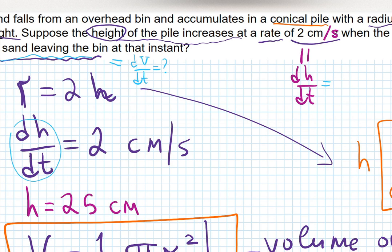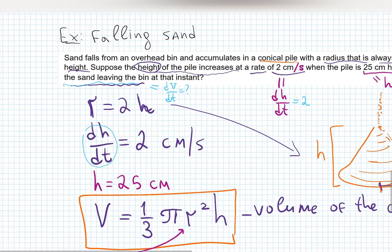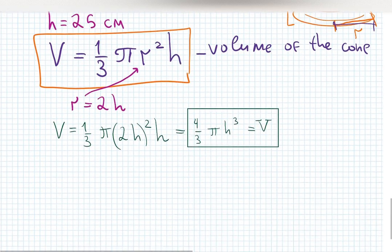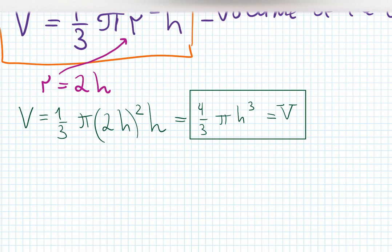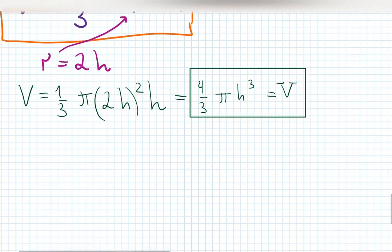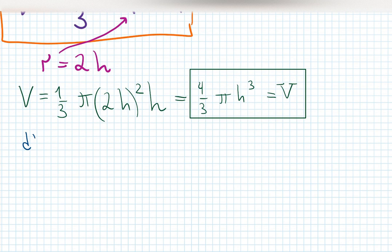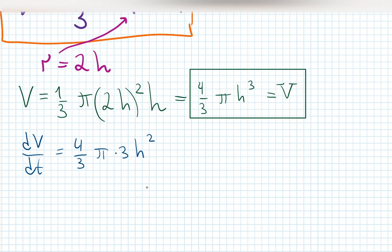dh/dt is 2; dV/dt is unknown. That's the classical related rates setup — one rate given, one unknown. Now differentiate V equals four-thirds pi h-cubed. Four-thirds is constant, pi is constant, h is the variable with respect to t. So dV/dt equals four-thirds pi times three h-squared.